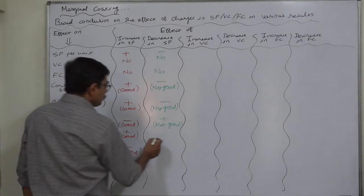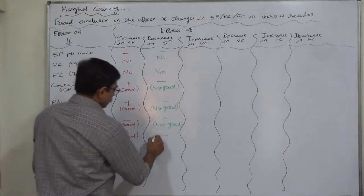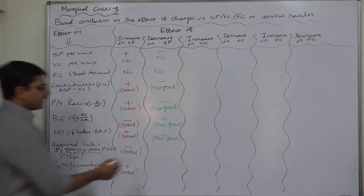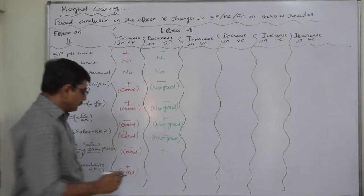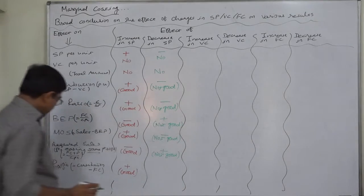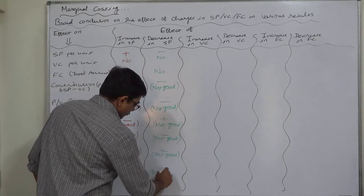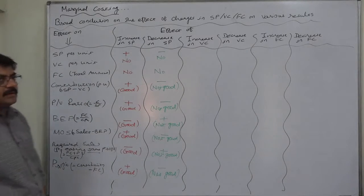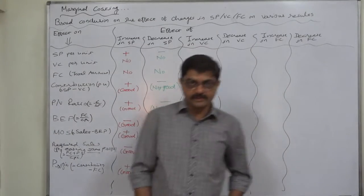Margin of safety is also going to decrease — not good for the financial health of the firm. Required sales will increase, because to earn the same amount of profit we will have to make greater sales. Profit will decrease — not good at all. We don't mean we should earn as much profit as possible; we should earn reasonable profit.